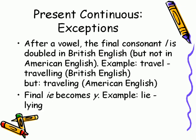Present continuous exceptions continued. After a vowel, the final consonant L is doubled in British English, but not in American English. Example: 'travel' → travelling (British English), traveling (American English). Final IE becomes Y. Example: 'lie' → lying.